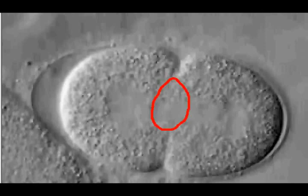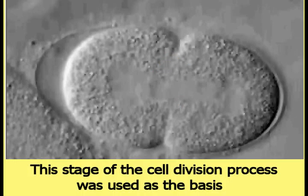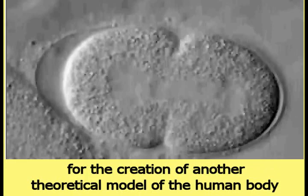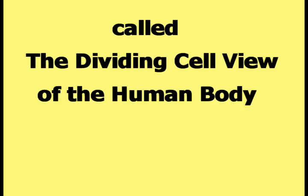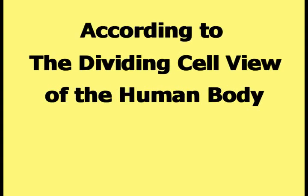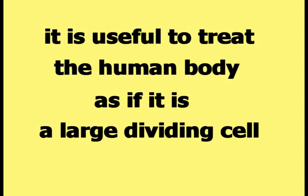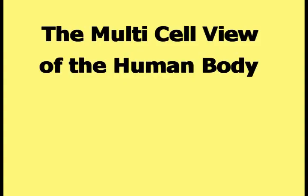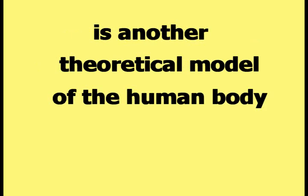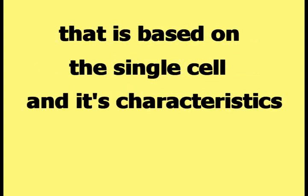This picture shows one stage of the cell division process when the two new cells are still partially connected to each other. This stage was used as the basis for the creation of another theoretical model called the dividing cell view of the human body. According to this view, it is useful to treat the human body as if it is a large dividing cell, located as shown in this picture. The multi-cell view of the human body is another theoretical model based on the single cell and its characteristics.